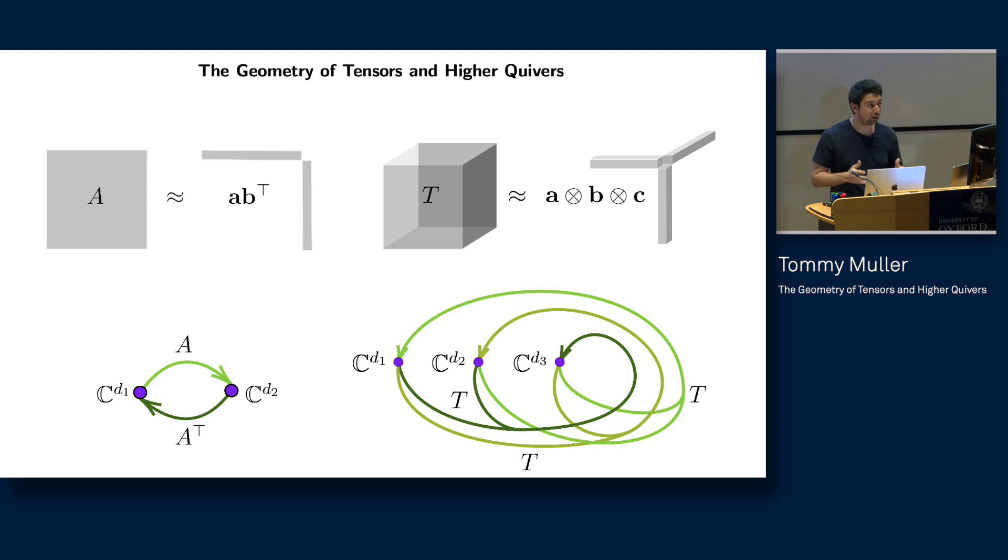Tensor decomposition is the multi-linear analog of a singular value decomposition or SVD for matrices shown in the top left, which is a method of approximating a matrix as an outer product of two vectors a b transpose. As many of you know, SVD is the workhorse of principal component analysis or PCA for high dimensional data. Just like matrices have singular vectors, tensors also have singular vectors, and these are the vectors which provide the best rank one approximation.